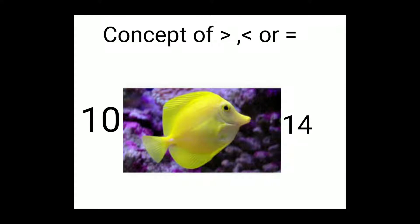So when there will be a greater number, the face of the fish will remain towards the greater number and the tail of the fish will remain towards the smaller number. The number which is very close to 0 is smaller and the number which is far away from 0 will be greater.